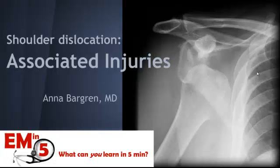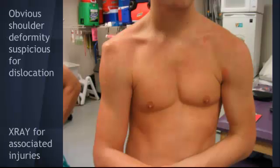The subject for today's EMN5 is shoulder dislocations, and more specifically, the injuries associated with shoulder dislocations. When a patient comes in with an obvious shoulder deformity suspicious for dislocation, before you start thinking about your favorite relocation technique, you need to decide if you're going to get an X-ray to see if there are any associated injuries.